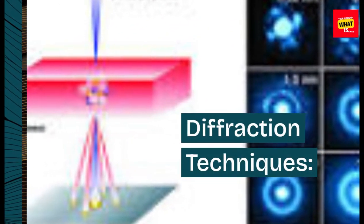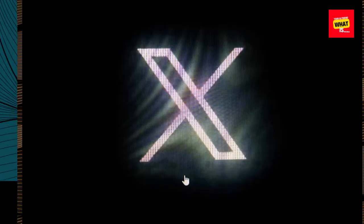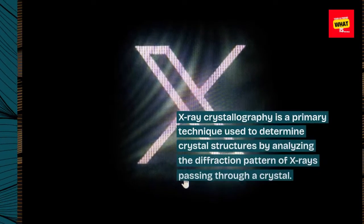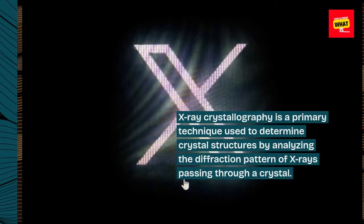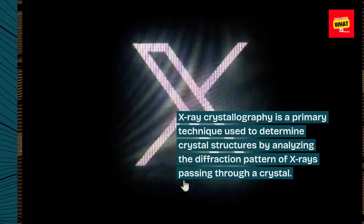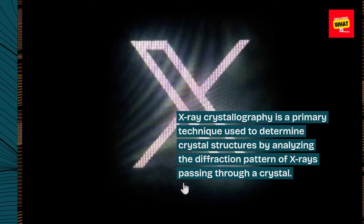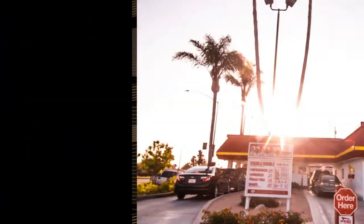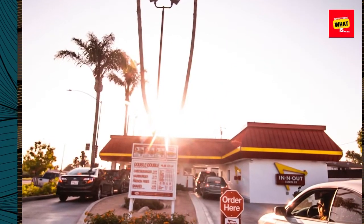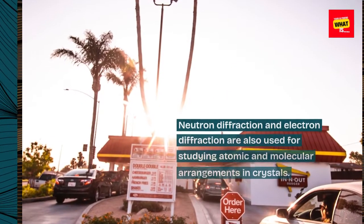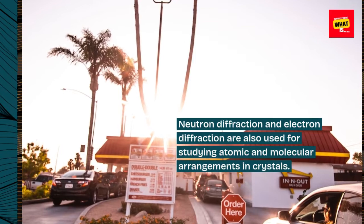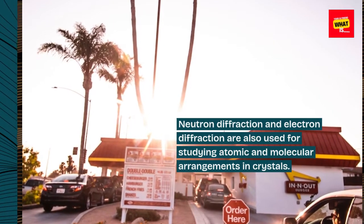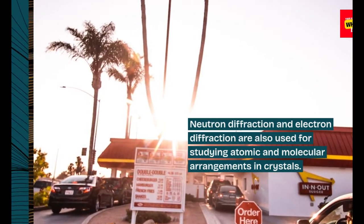Diffraction Techniques. X-ray crystallography is a primary technique used to determine crystal structures by analyzing the diffraction pattern of X-rays passing through a crystal. Neutron diffraction and electron diffraction are also used for studying atomic and molecular arrangements in crystals.